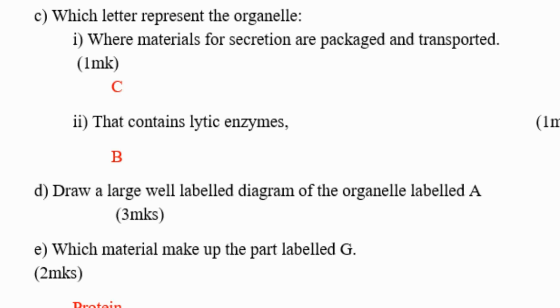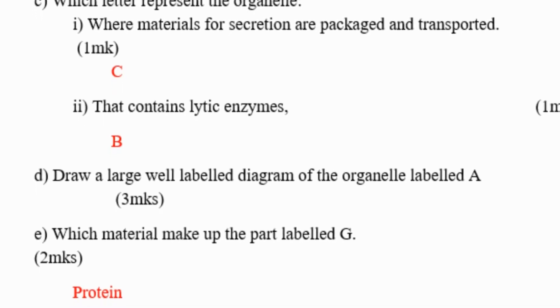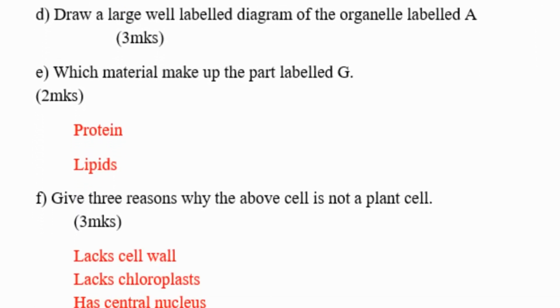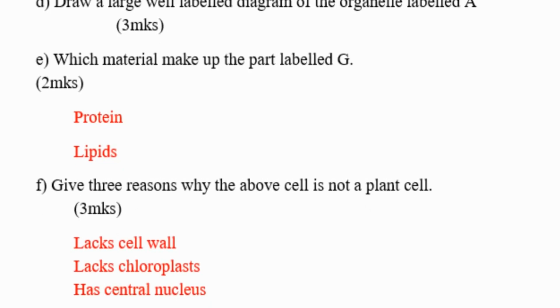You must draw it properly for you to get the mark. Which material makes up the part labeled G? Part labeled G is made up of protein and lipids. Question F: Give three reasons why the above cell is not a plant cell.